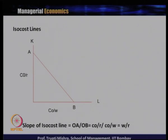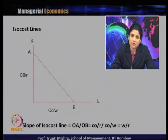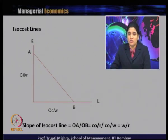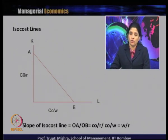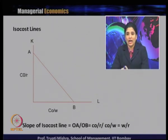We now know the isoquant, which keeps the level of production constant with different combinations of capital and labour. The iso cost is the budget constraint of the firm, because the firm cannot keep increasing input levels without bearing the cost. So the iso cost line represents that constraint. With the help of iso cost and isoquant together, we can find the optimal input combination.